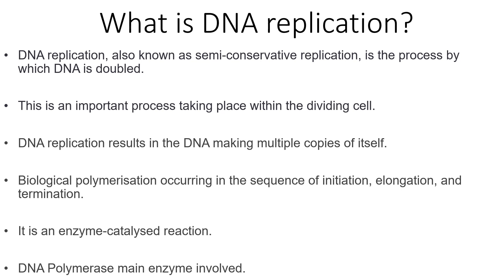So what is DNA replication? DNA replication is known as a semi-conservative process by which DNA is doubled. This is an important process which takes place within the dividing cell, and this results in the DNA making multiple copies of itself. This occurs via three processes: initiation, elongation, and termination. It's worth noting that in other videos these same steps appear, but for each process there's a different one. This is an enzyme-catalyzed reaction and DNA polymerase is the main enzyme involved.